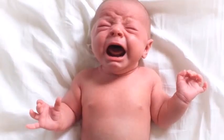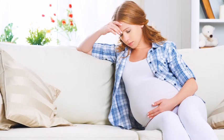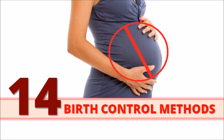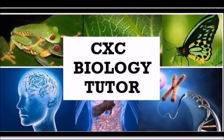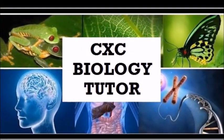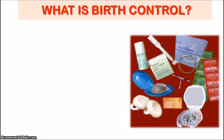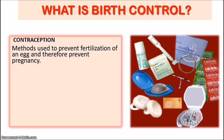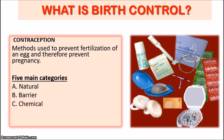Are you not ready to have a baby at this point in life — does the thought of getting pregnant terrify you? In this video, I'm going to discuss 14 birth control methods you and your partner can consider to prevent pregnancy. Birth control is the common term used to describe contraception, which are methods used to prevent fertilization of an egg and therefore prevent pregnancy. I'll look at five main categories, and for each I'll outline the purpose, advantages, and disadvantages.